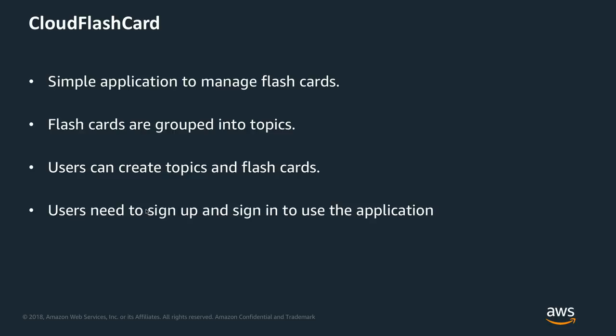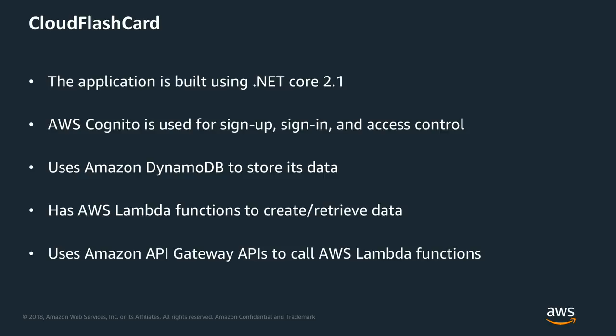Next, we're going to talk about the Cloud Flashcard — a simple application to manage flashcards. You have flashcards grouped into topics. The user can create topics and create flashcards related to those topics. But before using the application, users need to sign up and sign in before creating and managing flashcards. The application is built using .NET Core 2.1. I'm using AWS Cognito to sign up and sign in users, DynamoDB to store the data — mainly topics and flashcards — and AWS Lambda functions to create those topics and flashcards and store them in DynamoDB, put them in ElastiCache, and maybe get some information from S3 if we are recording the flashcards by voice.